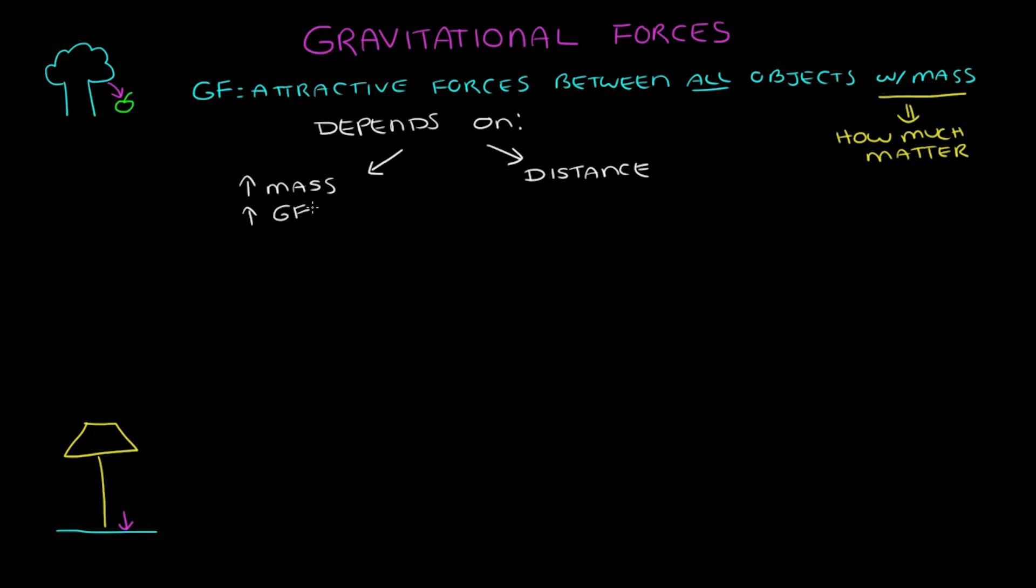And now we can understand why gravity makes things fall. The Earth is massive, literally. It's almost six septillion kilograms. That's a six with 24 zeros after it. So it generates a huge attractive force. For comparison, my lamp is only one kilogram, which is why if I jump, I fall towards the Earth and not towards my lamp.